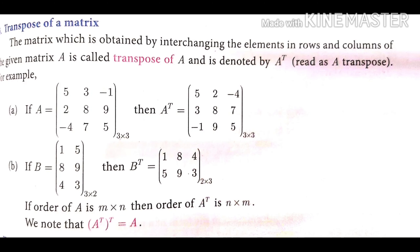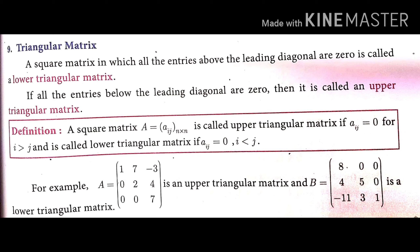The eighth type is the transpose of a matrix. Interchanging the rows and columns of a given matrix A is called the transpose of A, denoted by Aᵀ. For example, if A = [5, 3, -1; 2, 8, 9; -4, 7, 5] (a 3×3 matrix), then Aᵀ = [5, 2, -4; 3, 8, 7; -1, 9, 5], converting columns to rows.